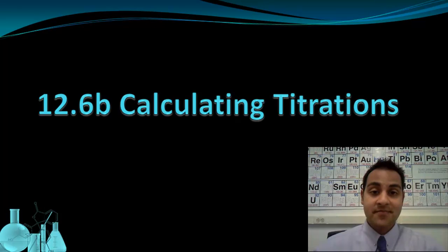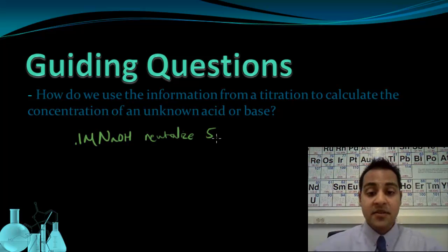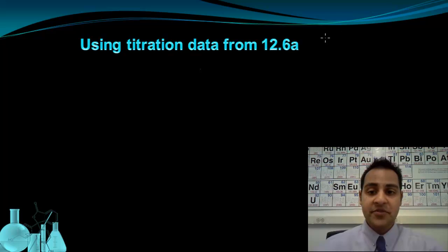Welcome to calculating titrations. In the previous video, we used a base, sodium hydroxide, of a known concentration, 0.1 molar, to neutralize 5 milliliters of an unknown concentration of hydrochloric acid. Now we're going to look at how to use this information to calculate the concentration of the hydrochloric acid. So we're going to use our data from the previous video.